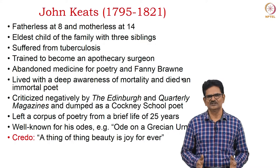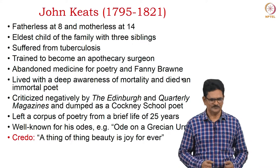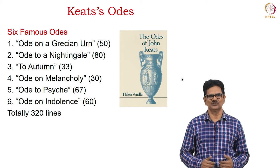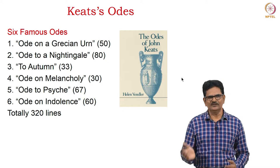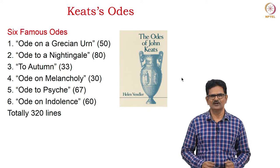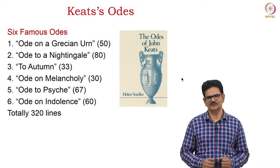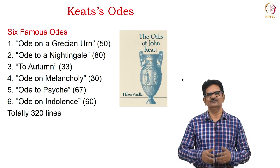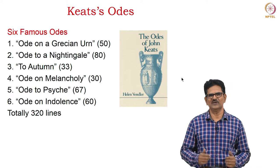Beauty, truth, and goodness were very important for poets like Keats. His six famous odes are: 'Ode on a Grecian Urn,' 'Ode to a Nightingale,' 'To Autumn,' 'Ode on Melancholy,' 'Ode to Psyche,' and 'Ode on Indolence.' All together, we have only three hundred and twenty lines from these six odes, but these three hundred and twenty lines have kept the fame of John Keats alive to this day. There are many books on these odes, including one by Helen Vendler.